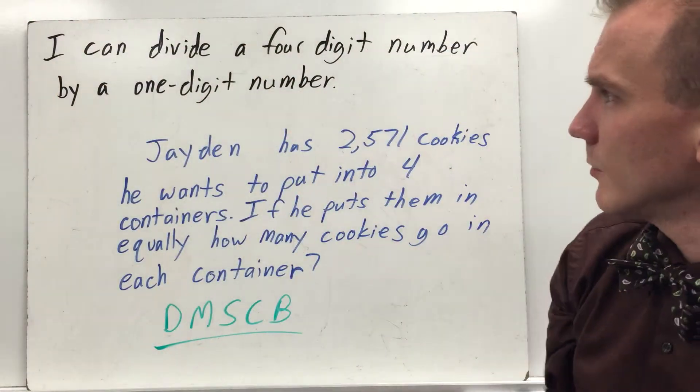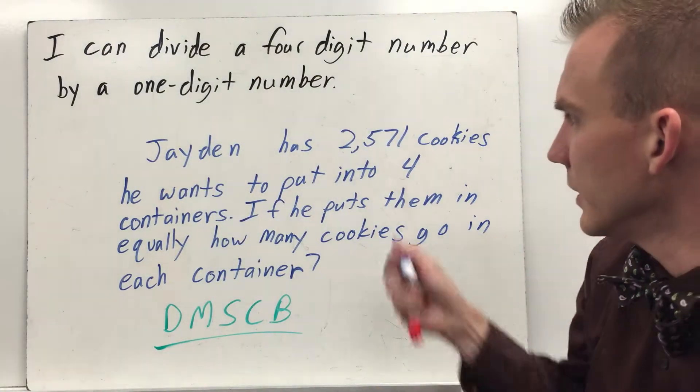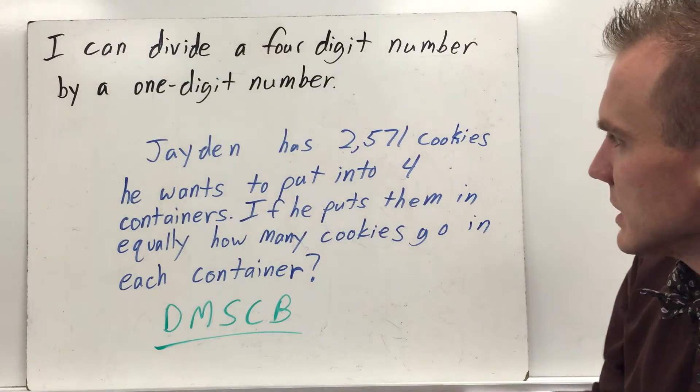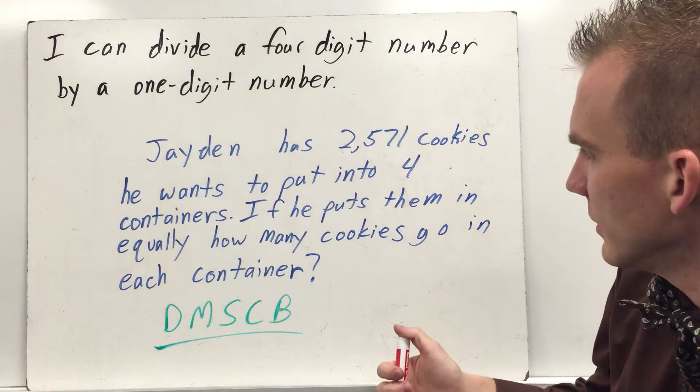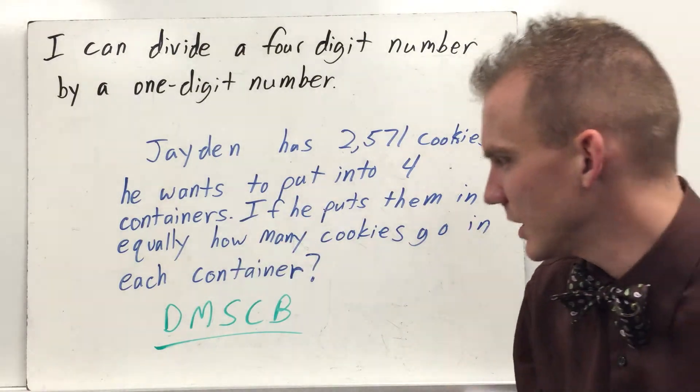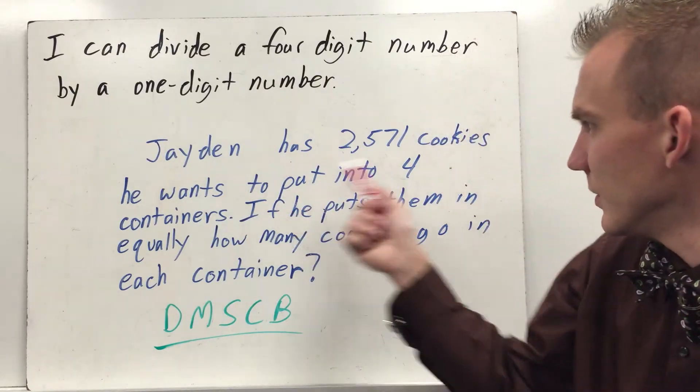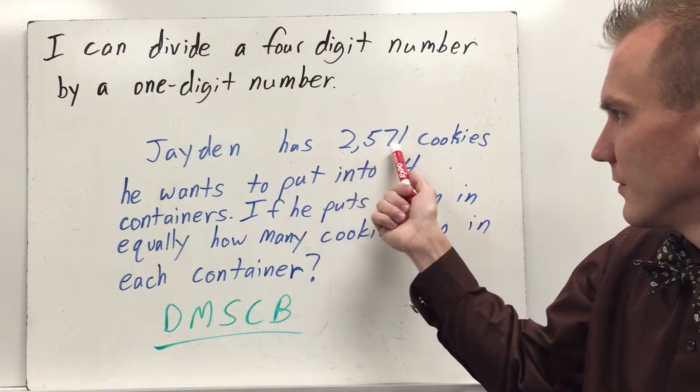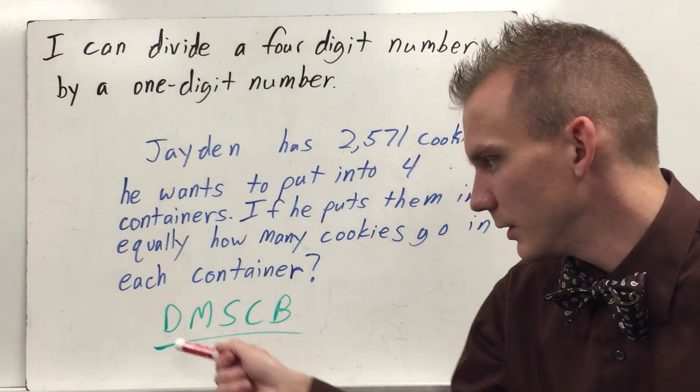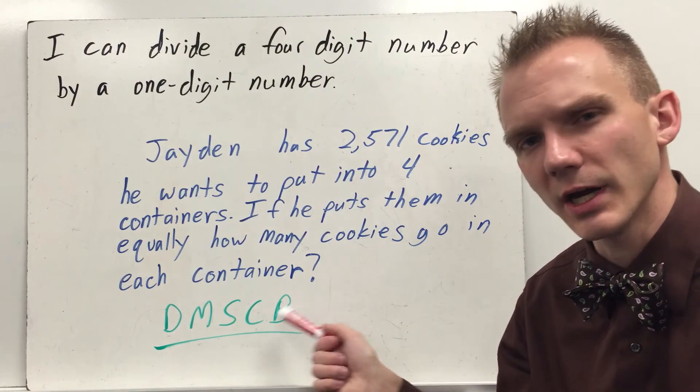I can divide a four digit number by a one digit number. Here's another word problem worded a little bit differently. Jaden has 2,571 cookies. He wants to put them into four containers. If he puts them in equally, how many cookies go in each container? So this is the one where it's how many in each group versus how many groups. We know there's going to be four groups. Remember, does McDonald's serve cheeseburgers? Divide, multiply, subtract, check, bring down.